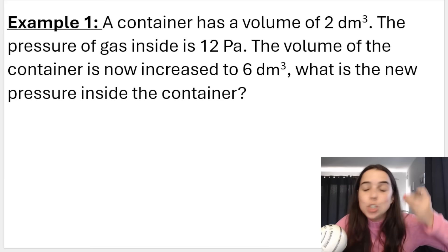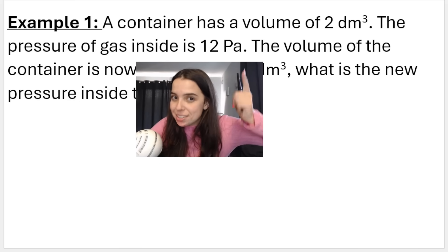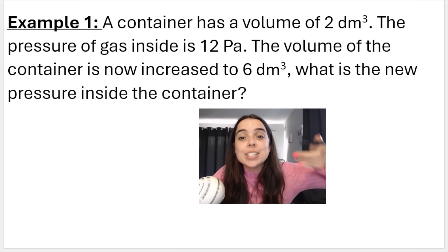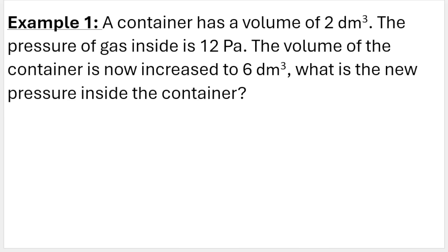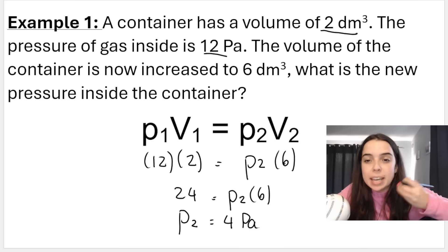Let's look at our first example. A container has a volume of two cubic decimeters, the pressure is 12 pascals. The volume is now increased to six cubic decimeters, what's the new pressure? V1 is two, P1 is 12, V2 is six, we're looking for P2. 12 times 2 is 24, then P2 multiplied by 6. To solve for P2 we say 24 divided by 6 and we get the new pressure as being four pascals. Just remember to write your formula first, substitute, answer with units.